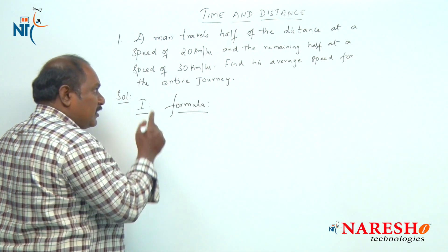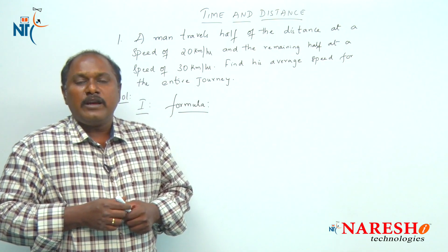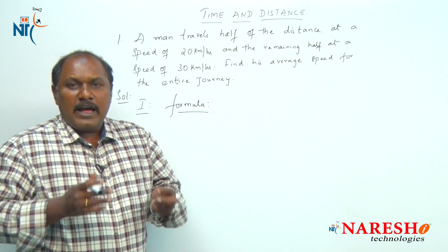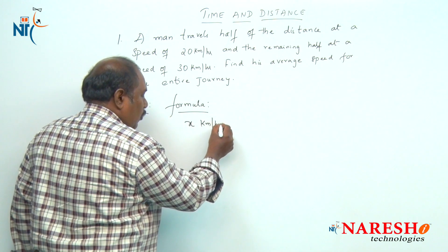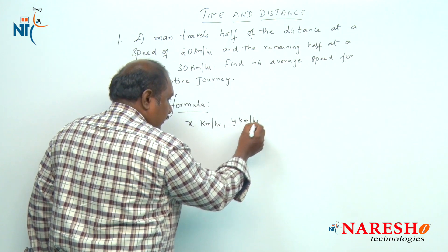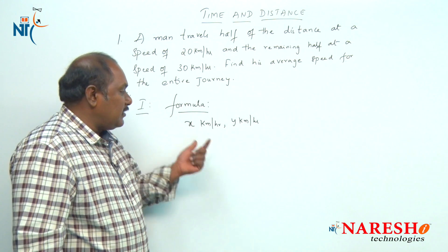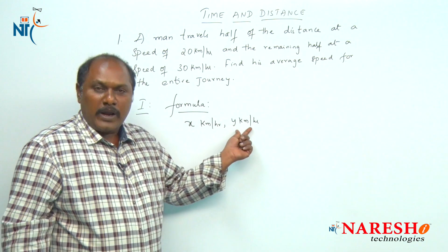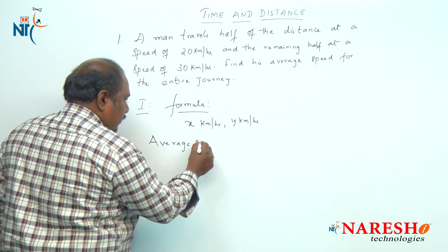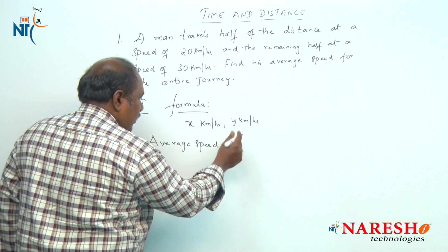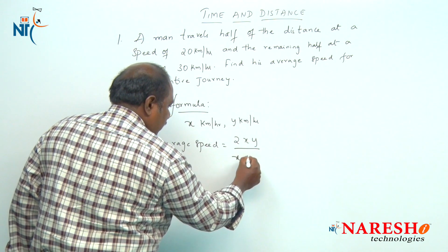What is the formula for this particular problem? If a man travels two equal distances at speeds of x km per hour and y km per hour, then the average speed for the entire journey is given by 2xy divided by (x plus y).